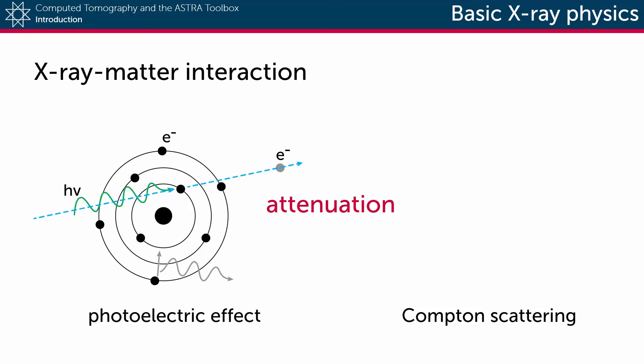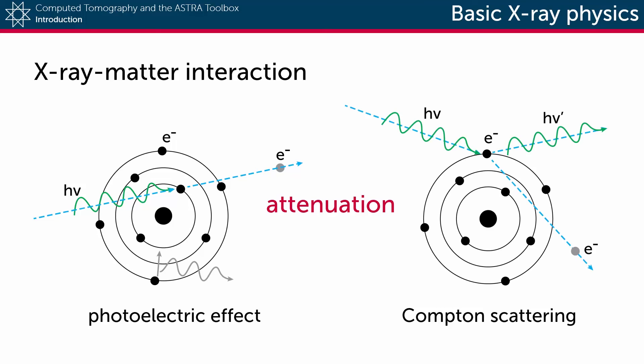In Compton scattering, the incoming photon is not fully absorbed after hitting the electron, but does change direction, also called scattering.